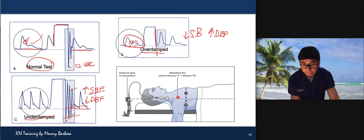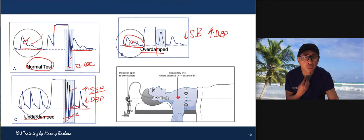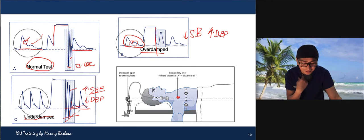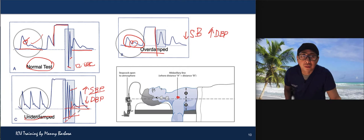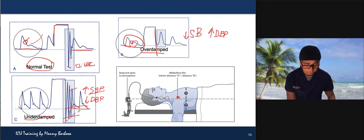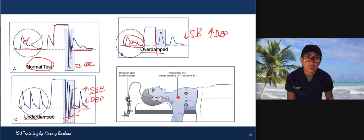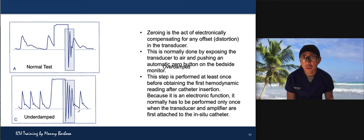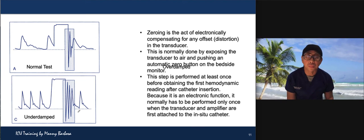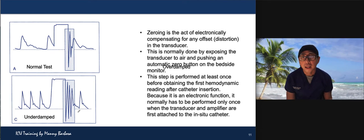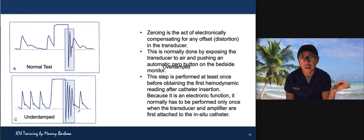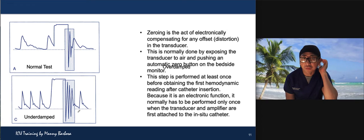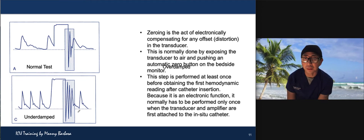To correct an underdamped system, remove all air bubbles from the fluid system. You can also shorten your tubings if they are too long. Regarding zeroing: zeroing is the act of electronically compensating for any offset distortion to make your data more accurate. This is done by exposing the transducer to air — close to patient, open to air, then zero the monitor. This step is performed once before the beginning of your shift for hemodynamic readings.